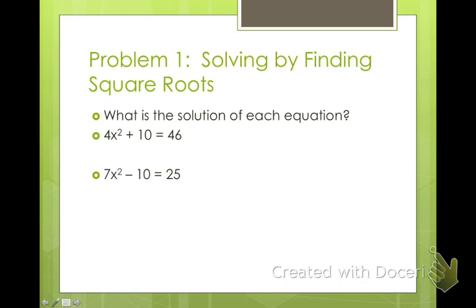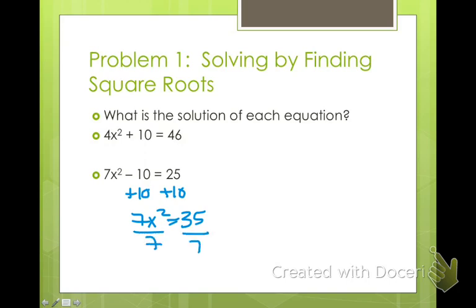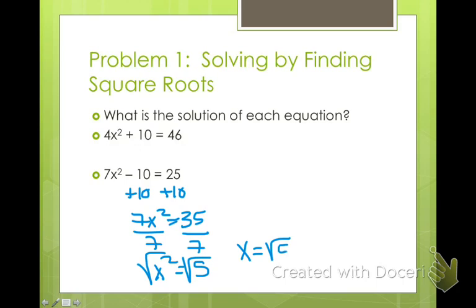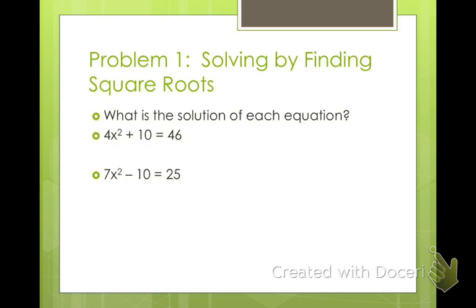Let's do another one. What would you do first? You would add 10. So I get 7x squared equals 35, then divide by 7. x squared equals 5. Square root — so x equals the square root of 5 and the negative square root of 5. What about this one? Go ahead and pause it and solve for yourself. I got x equals the square root of 2 and the negative square root of 2. Hopefully you got that too.